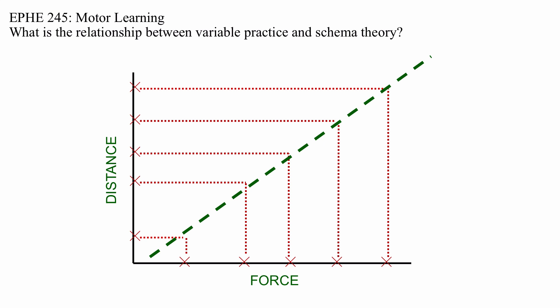So the schema is the relationship between a variable parameter such as force, although it could be other things such as time, and an output parameter such as distance.